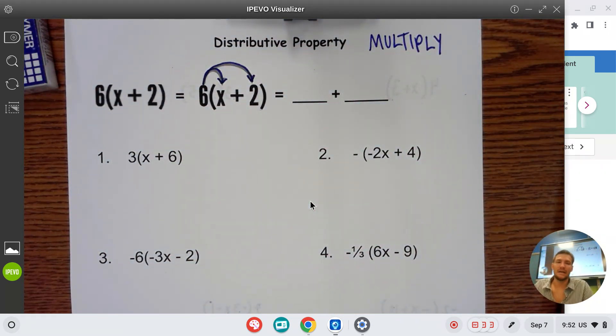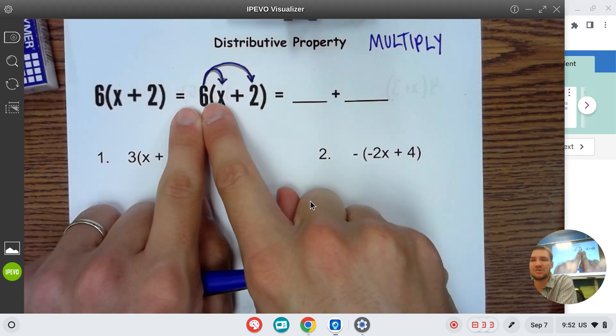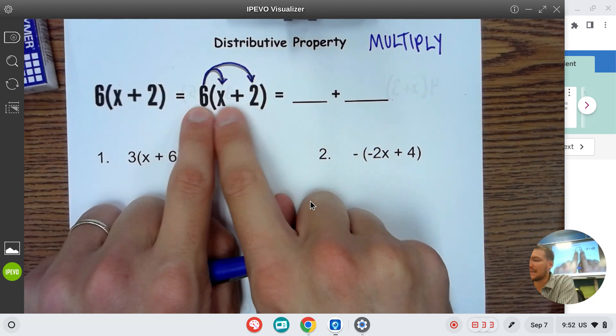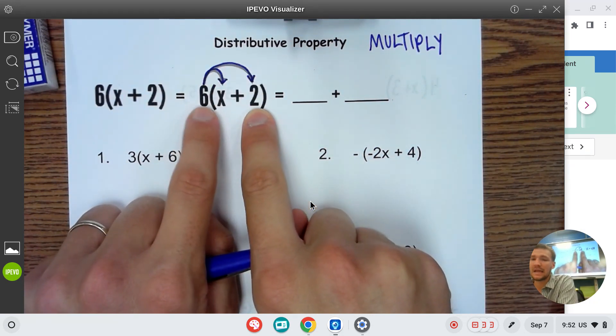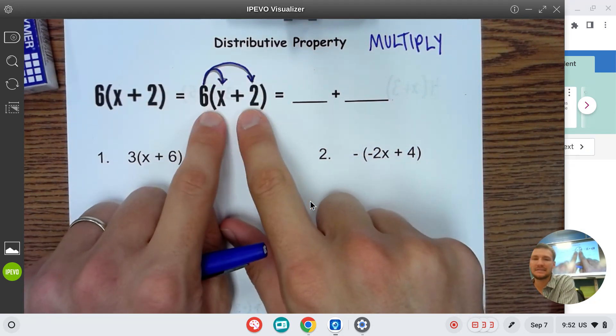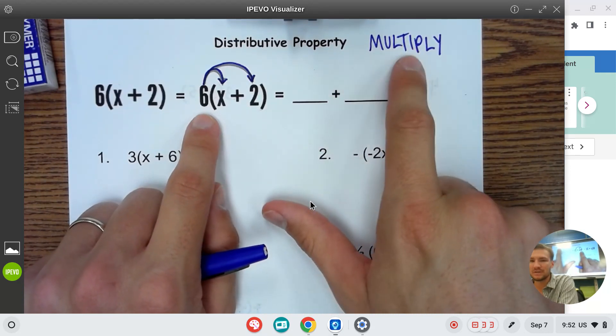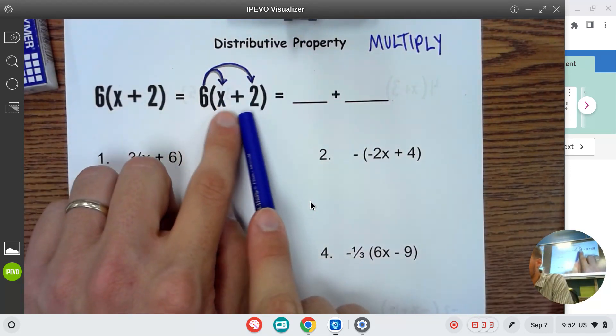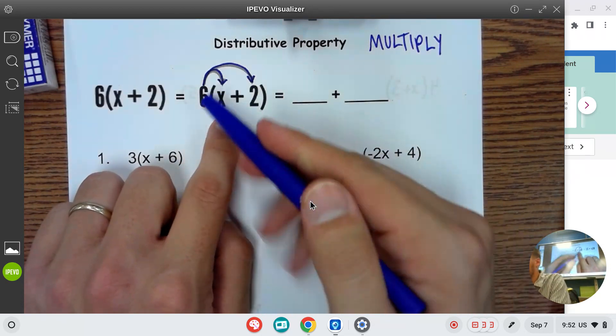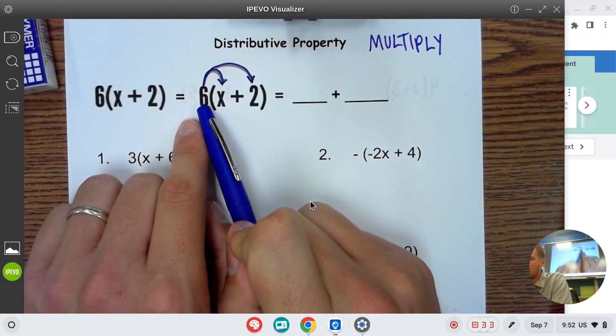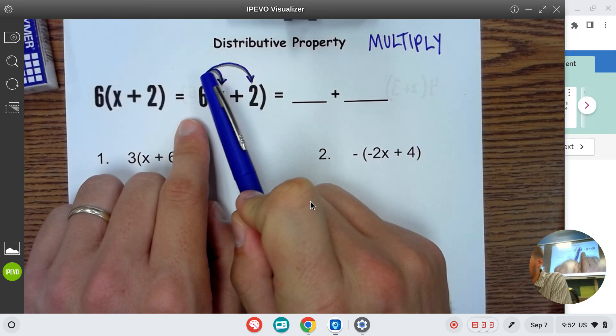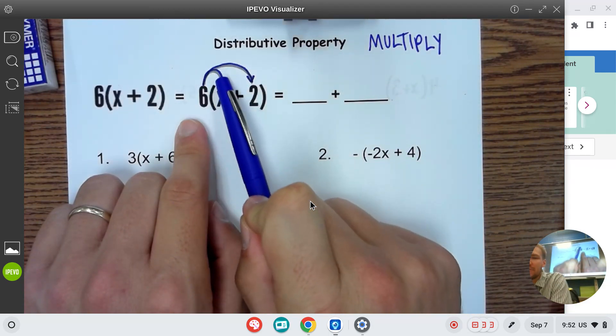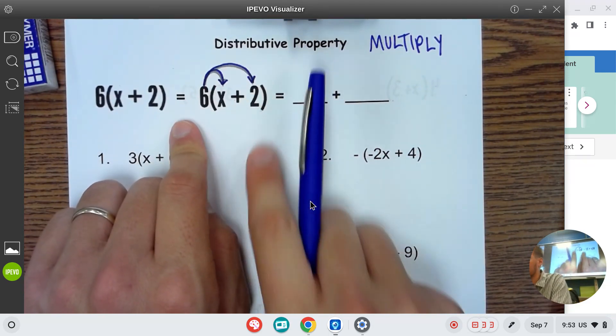So yesterday we worked on combining like terms. That's all about addition. Distributing is all about multiplying. Sometimes I see students who go to distribute the six onto the two and instead of six times two, they end up with six plus two and that is an incorrect answer. So multiplying is what we're up to here. Whenever we start with two things in the middle, distributing is making sure that this outside number gets multiplied one at a time by everything on the inside. And that's what these arrows help remind us to do.